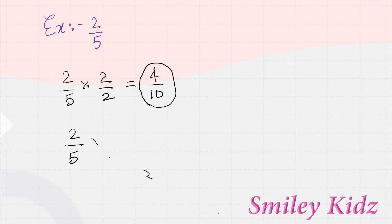Let me show another one. 2/5 multiplied by 3/3 is equal to 6/15. This is also an equivalent rational number of 2/5. In this way, we can find many equivalent rational numbers of a given rational number.